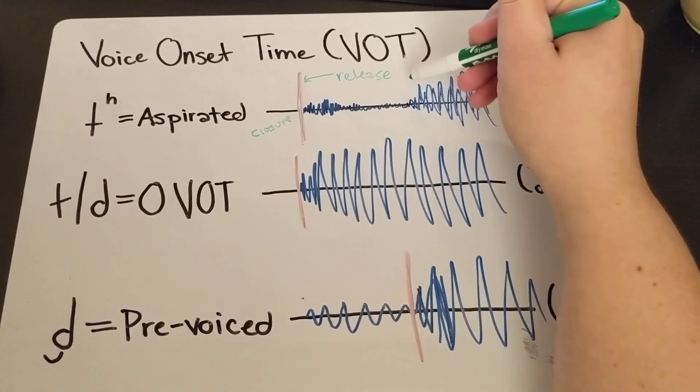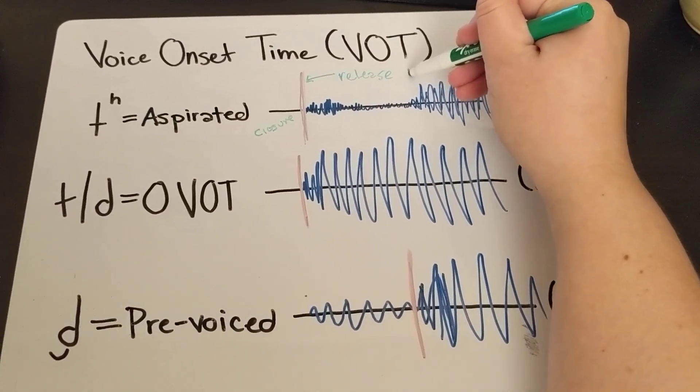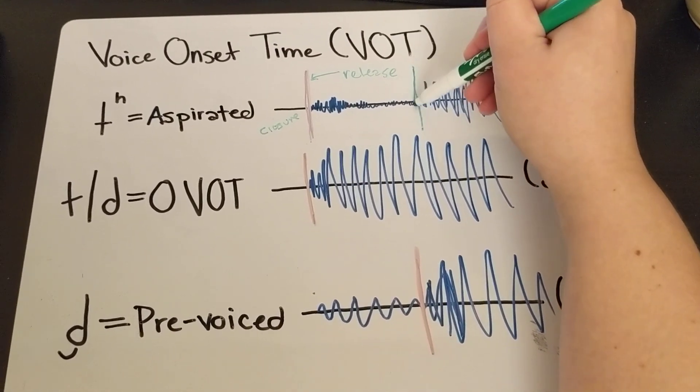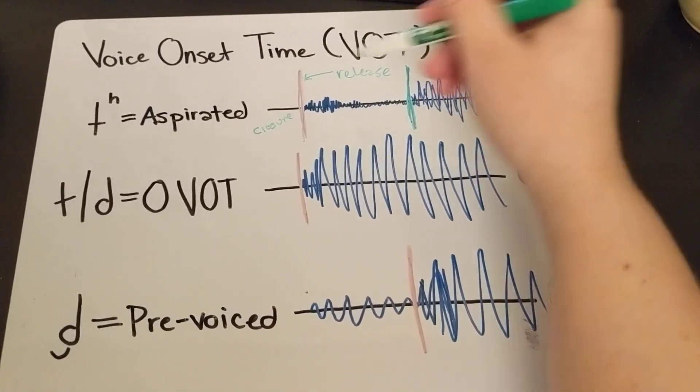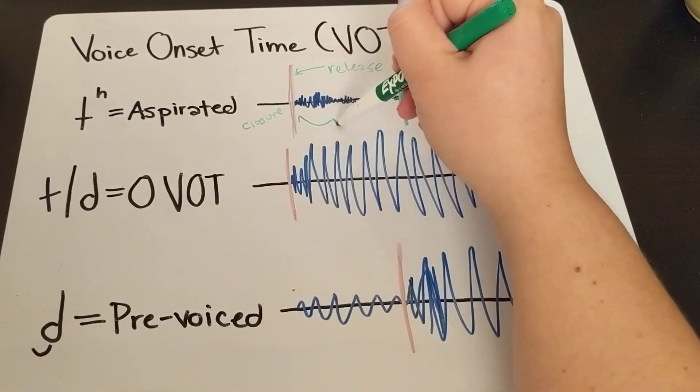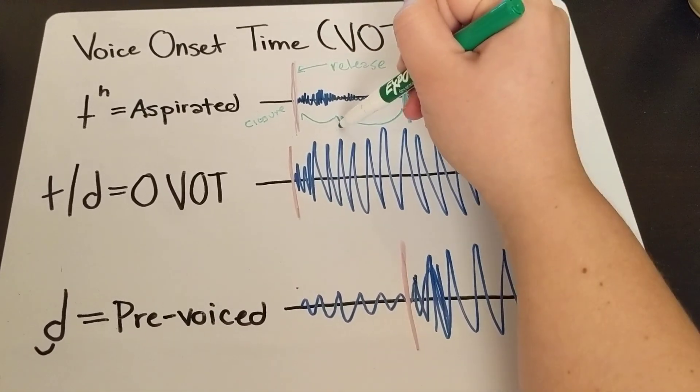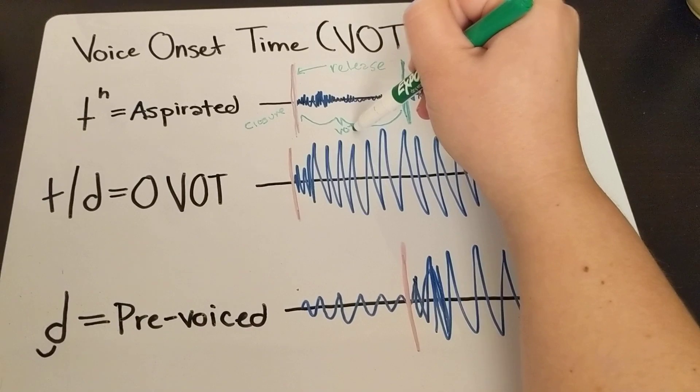And then eventually you get to a place where you have the vowel sound. The vowel sound is starting up. This period in here is your VOT, your voice onset time.